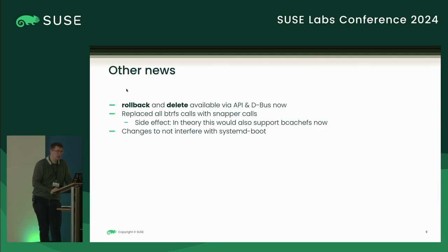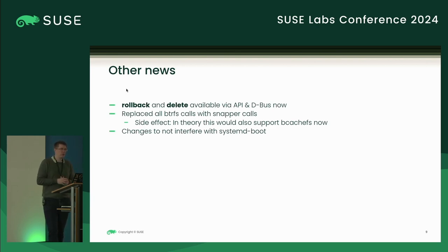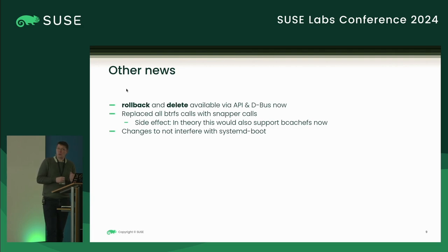Other news: if you are interested in using the API or are already an active user of the D-Bus service, all functionality of transactional update can be triggered via API and D-Bus. You can also call rollback and delete now via API and D-Bus.